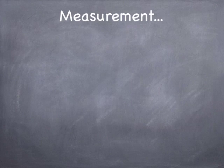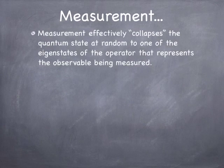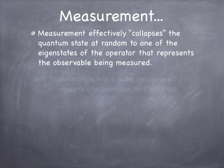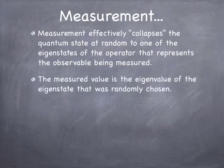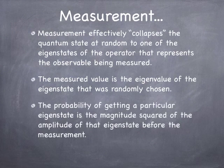What about measurement? Measurement is a process in quantum mechanics where you look at the system using a particular observable. If you measure a particular observable, the quantum state collapses to an eigenstate of that observable — actually an eigenvector of the operator that represents that observable. The measured value you get is the eigenvalue that corresponds to that eigenstate. The probability of getting a particular eigenstate is the magnitude squared of the amplitude of that eigenstate in the original state.